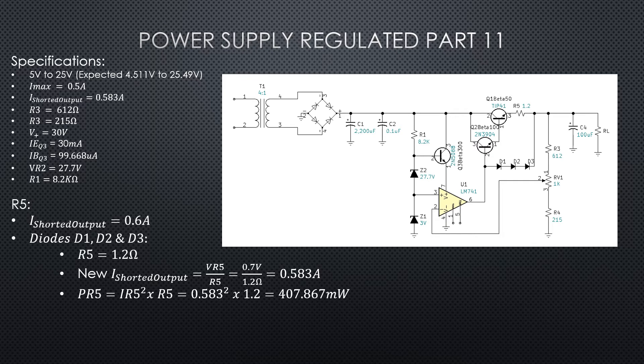We need to also calculate the power for PR5. So if we just do I squared times R, we know that we've got 0.583 amps squared times the 1.2 ohms. We end up with 407.867 milliwatts, so that's basically a half watt. In order to build this and run this, we probably want to run that at a full one watt resistor. So I've looked that up in Mouser, and we're going to have the parts at the end, but we've got a 1.2 ohm resistor rated at one watt for R5.